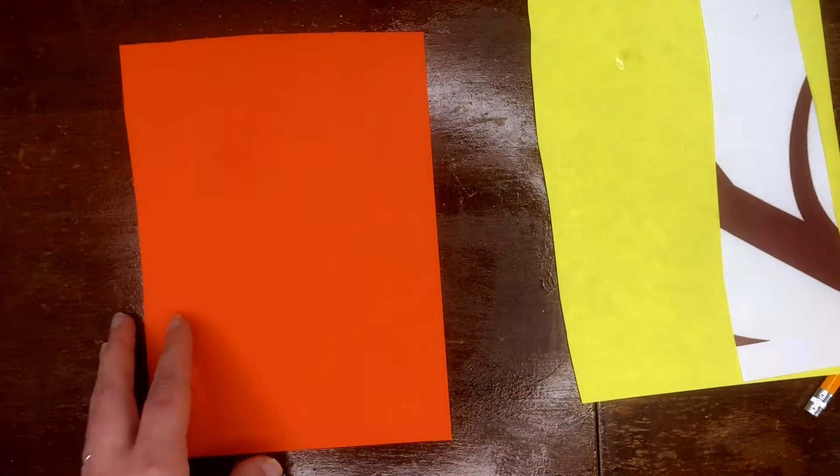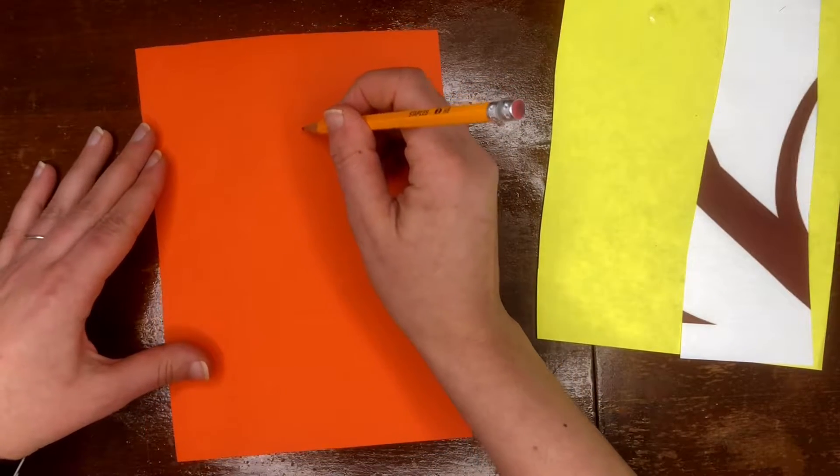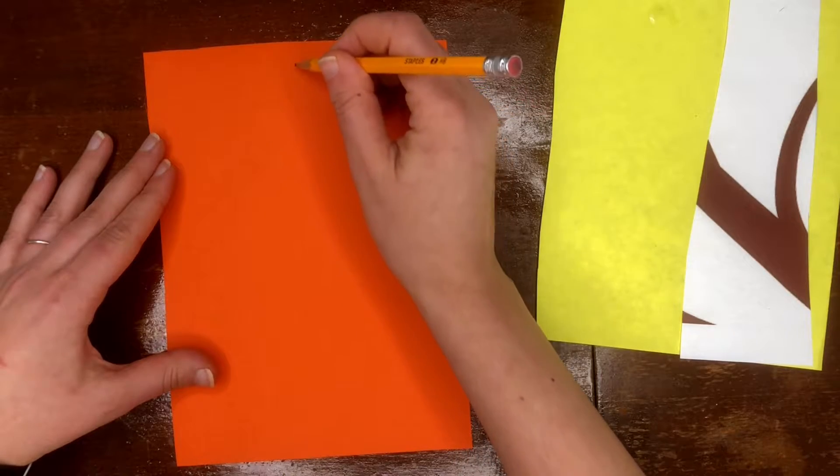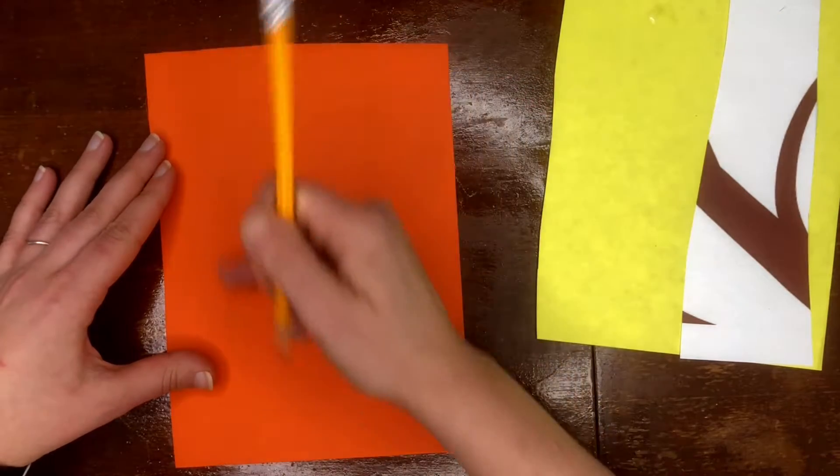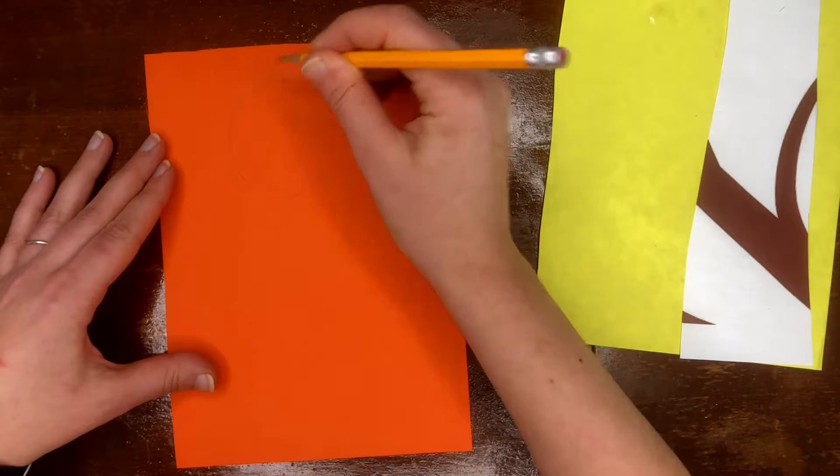The first shape we're gonna be cutting out is a circle with a wavy line around it. I'm gonna draw that in. You can trace a circle, or you can do it by hand. Don't do it in the middle because you want to be able to use your extra paper. I'm drawing my circle.